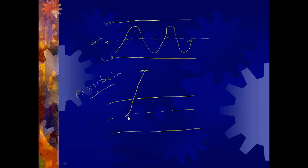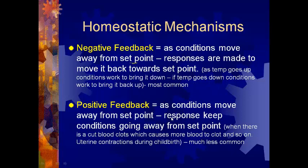Another example is blood clotting. If you get a cut, you have small structures called platelets. One platelet comes in and sticks to the wound, and that one platelet causes three more platelets to stick, those cause more platelets — more and more — until you have what's called a platelet plug, which helps stop the bleeding. Once the bleeding is stopped, the feedback mechanism shuts off. So a positive feedback mechanism: conditions move away from set point, the response keeps them going away from set point until we accomplish a goal, and then it shuts itself off. The key is that it has to shut itself off.